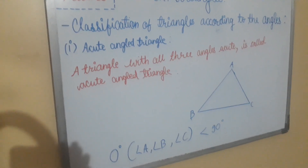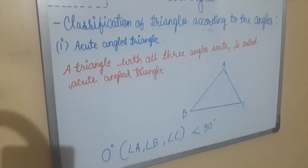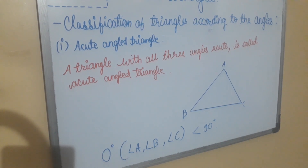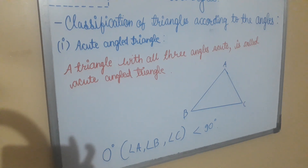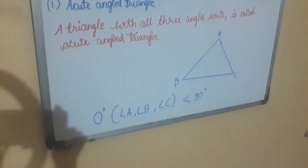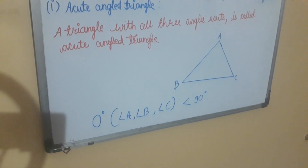Now the classification of triangles according to angles. First, the acute angled triangle. A triangle with all three angles acute is called an acute angled triangle. In triangle ABC, angle A, angle B, and angle C are each greater than 0 degrees and less than 90 degrees.